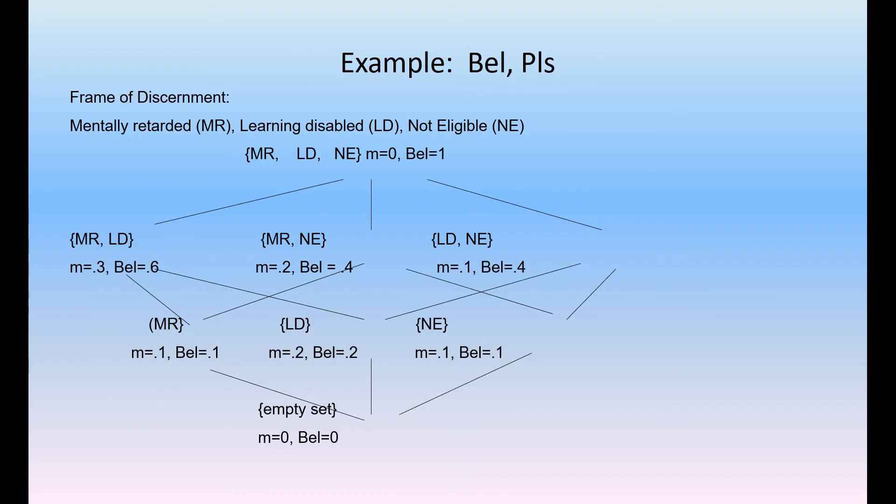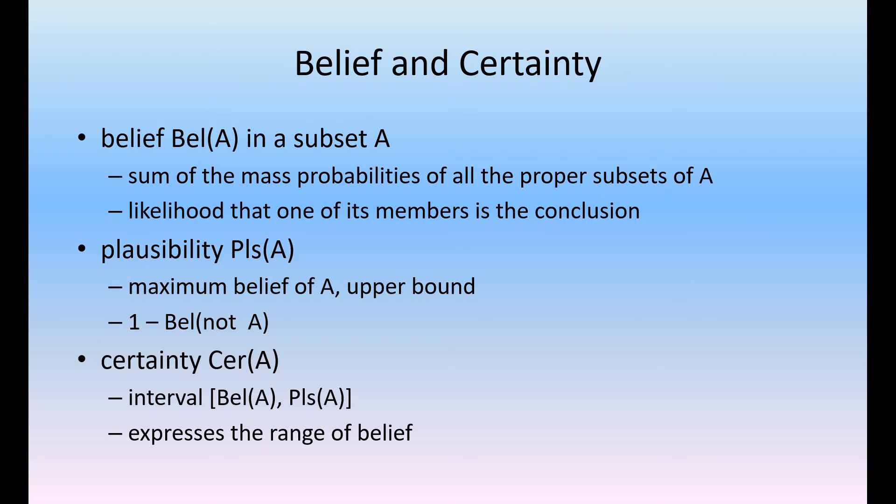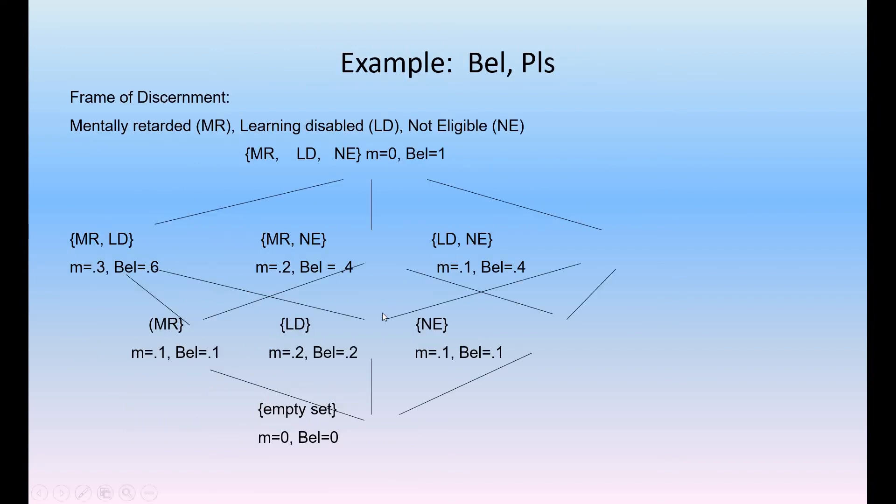Using these methods, we are going to describe this frame of discernment. Mentally retarded, the set M equal to 0, B equal to 1; M equal to 0.3, B equal to 0.6; M equal to 0.2, B equal to 0.4; M equal to 0.1, B equal to 0.4, and finally we have the empty set. This interval, belief and plausibility, has certain assumptions. We can describe this in the form of a set of intervals by using a set of values. This entire frame of discernment can be described by using the interval of 0 to 1. This interval also has certain meanings.